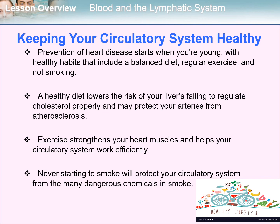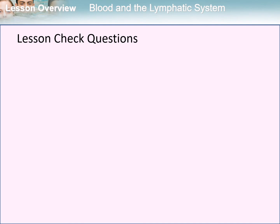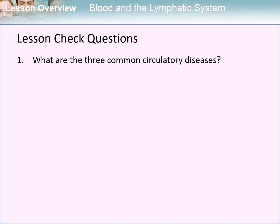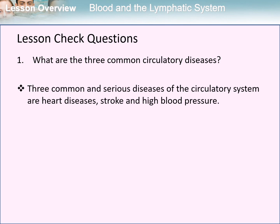That ends our discussion. Let us now move on to lesson check questions. I will pause for a while for you to think of your answer after I have given the question. For our first question: what are the three common circulatory diseases? The answer is the three common and serious diseases of the circulatory system are heart disease, stroke, and high blood pressure.